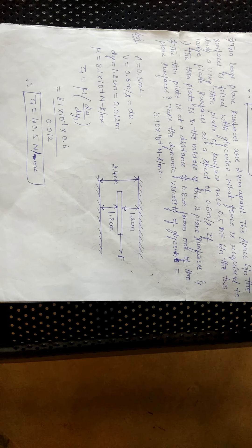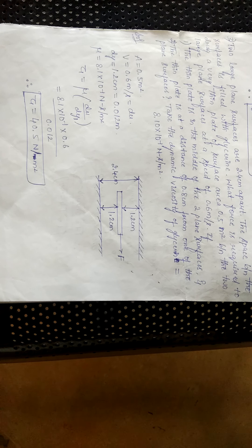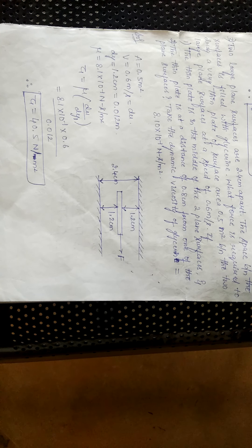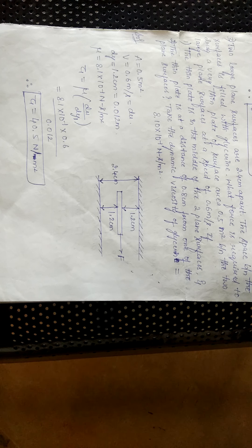What force is required to drag a very thin plate of surface area 0.5 m² between the two large plane surfaces at a speed of 0.6 m per second? Case 1: the thin plate is in the middle of the two plane surfaces. Case 2: the thin plate is at a distance of 0.8 cm from one of the plane surfaces. Take the dynamic viscosity of glycerin as 8.1 × 10⁻¹ Ns/m².